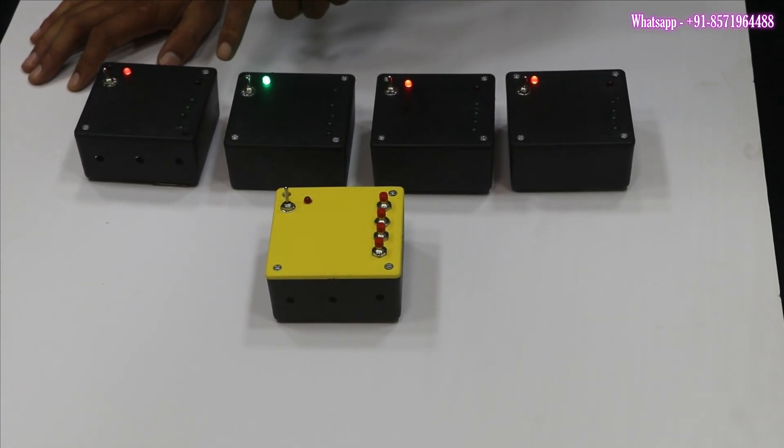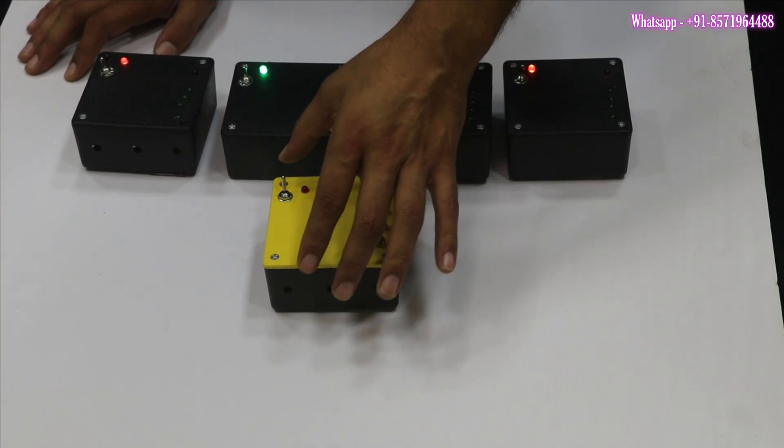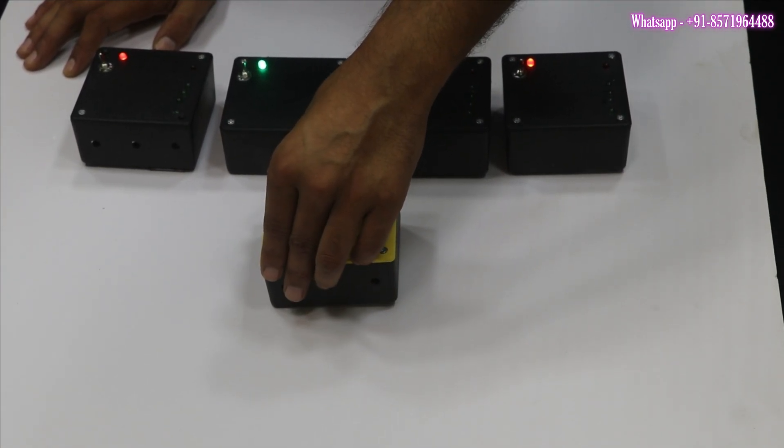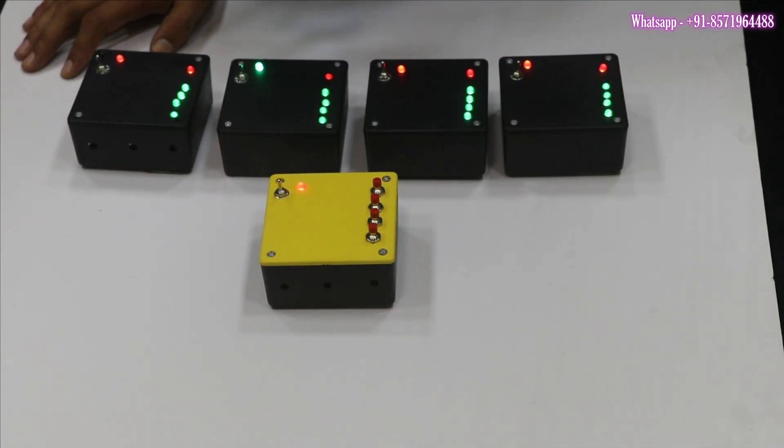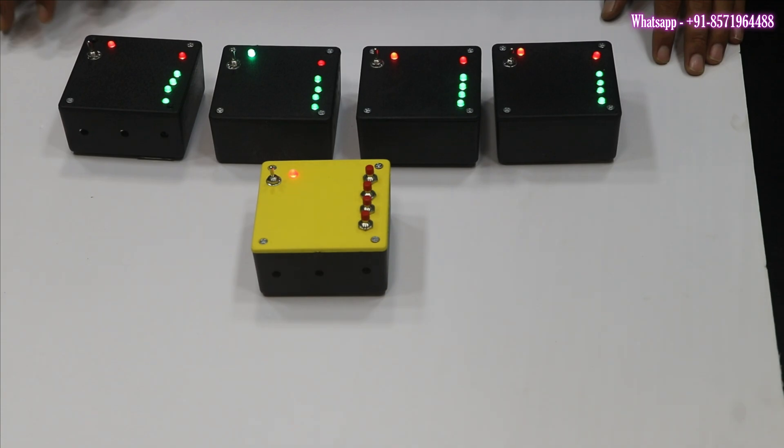This is the communication LED. This fifth number LED of all the modules is the communication LED. Because commander is not communicating, that's why this LED is off. As soon as commander will turn on the system himself, then all the system will turn on like this. You can see that now.